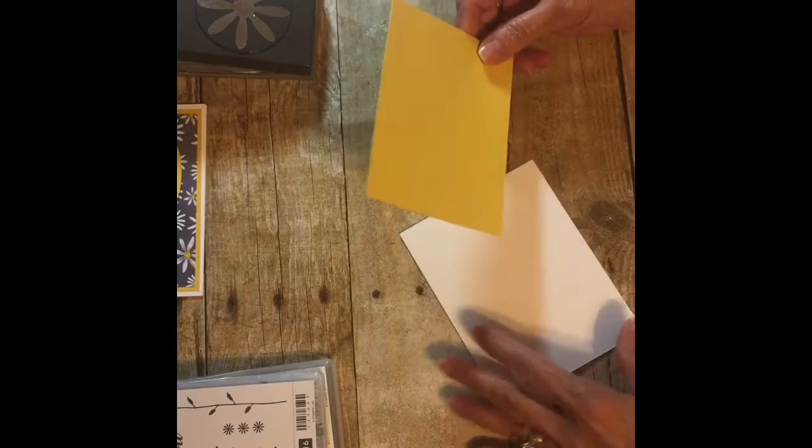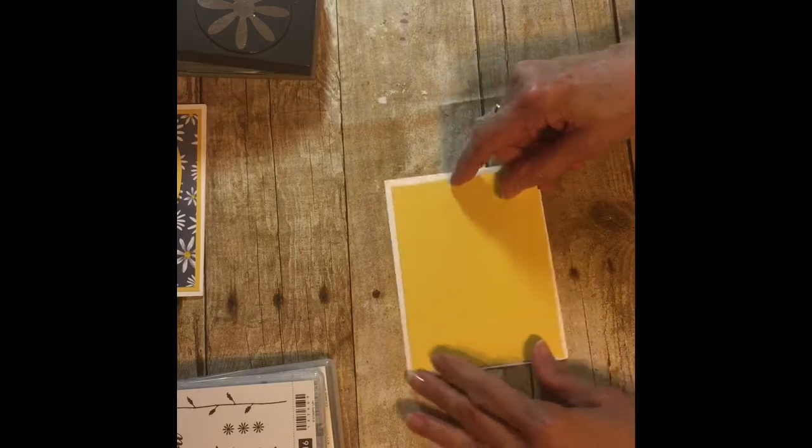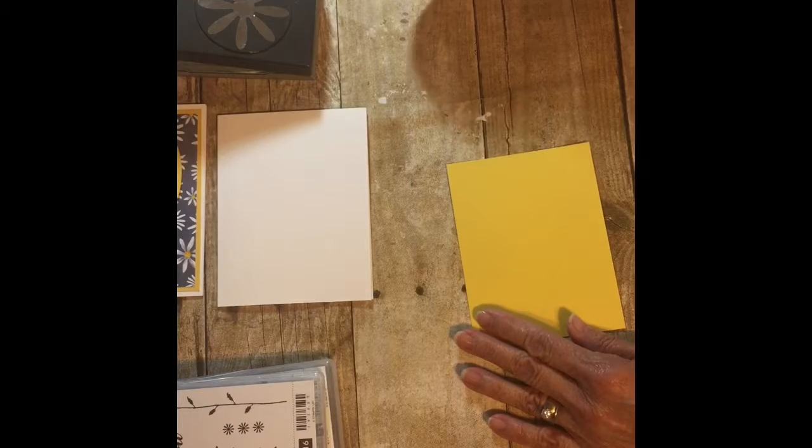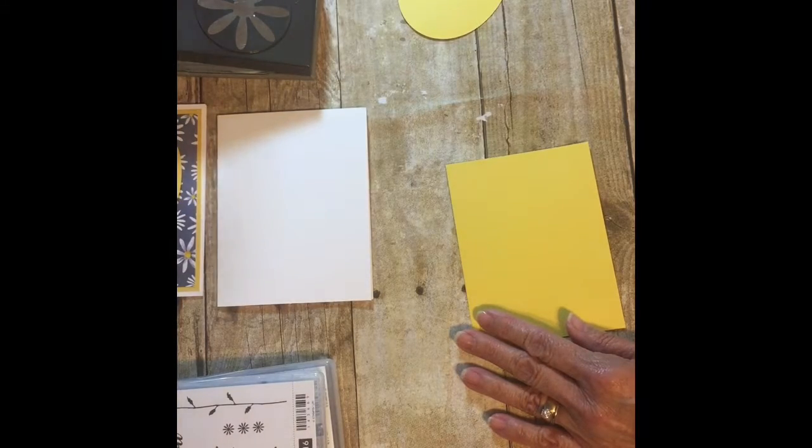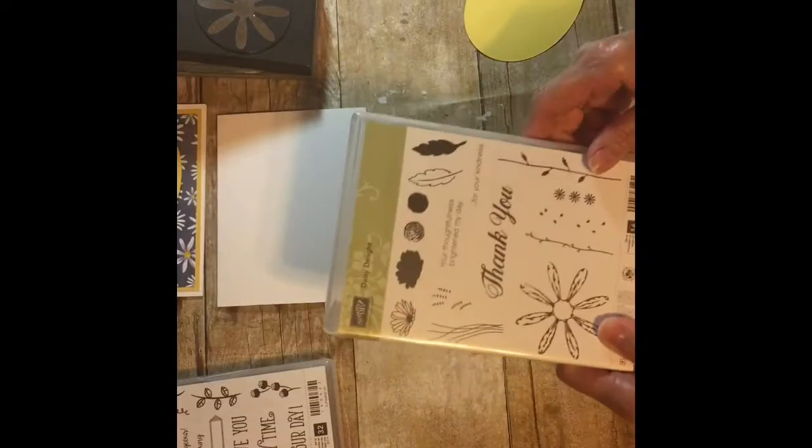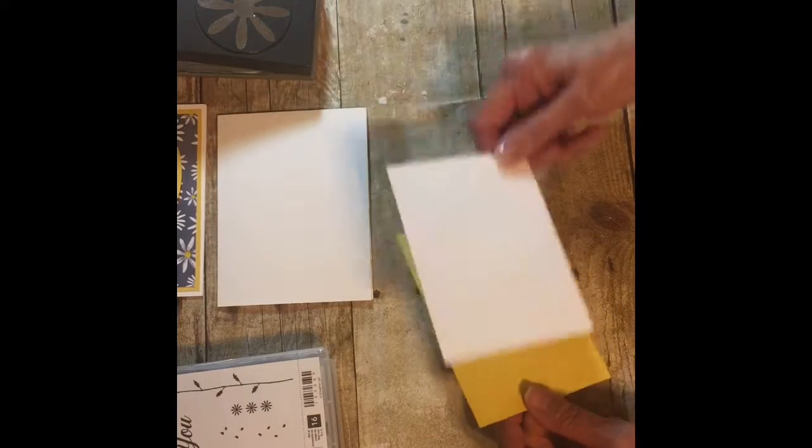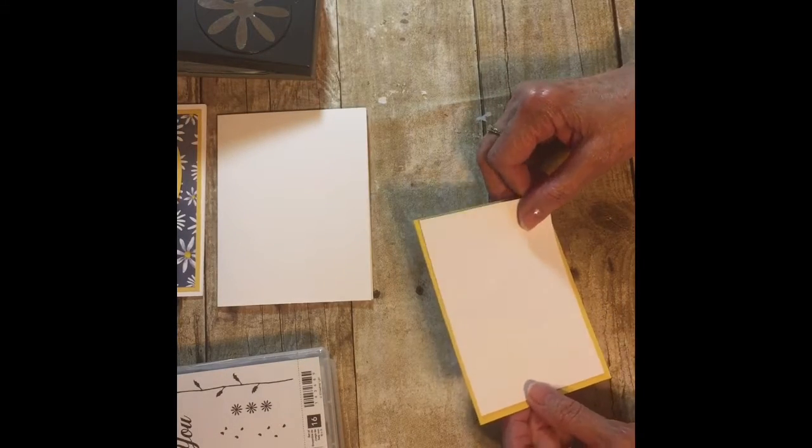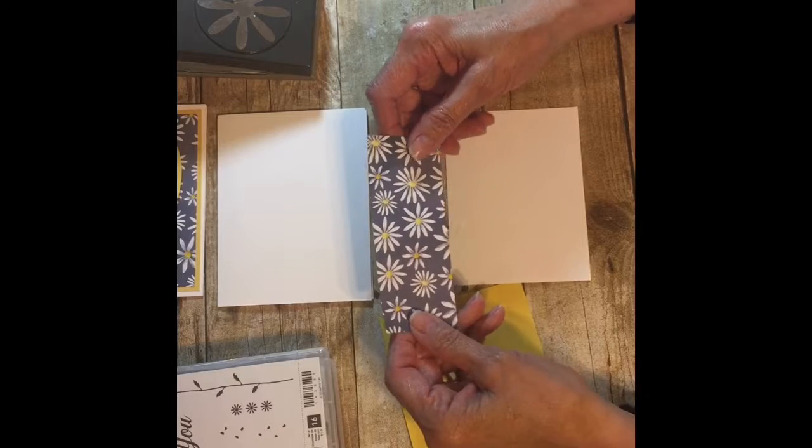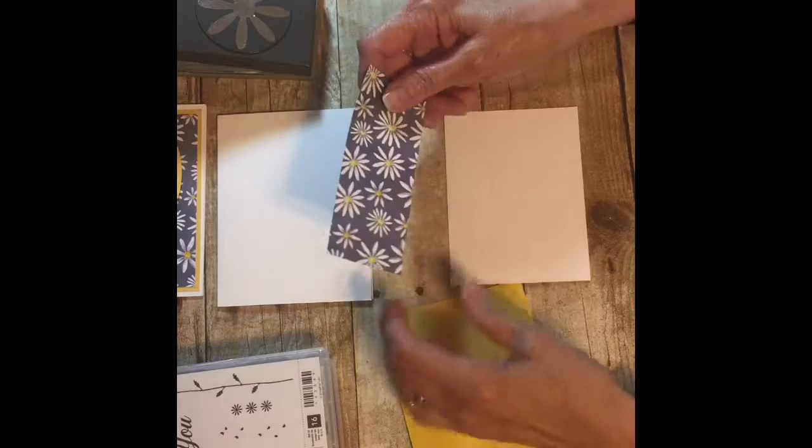Next I have a piece of five and a quarter by four of the Daffodil Delight. I got confused because of the Daisy Delight. Then I have another piece of Whisper White and this one is cut at five by three and three-fourths.